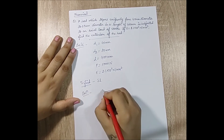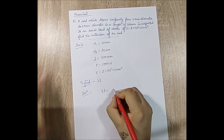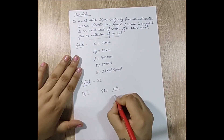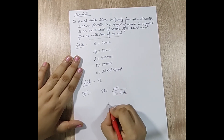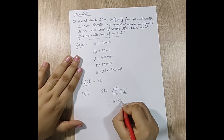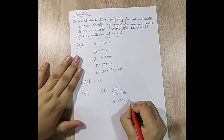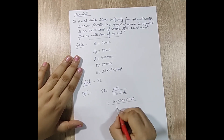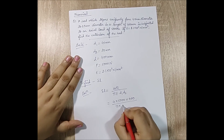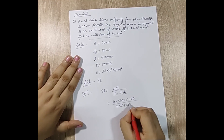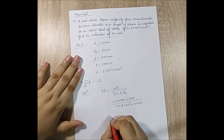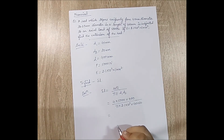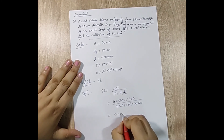The solution is straightforward. Using δl = 4PL / (π·E·d1·d2), substituting P = 5000, L = 400, d1 = 40, d2 = 20, and E = 2.1 × 10⁵, we get δl = 0.015 mm.